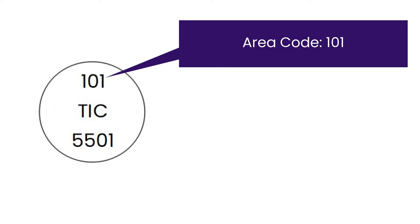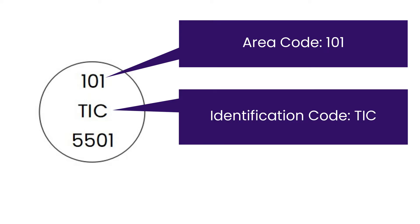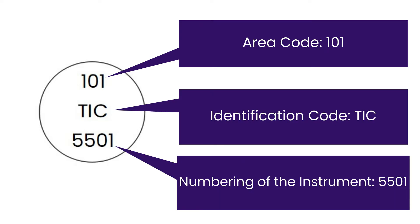We can also see some symbols like this. These symbols are made with three different parts. First is area code, that is 101. Second is parameter identification code, that is TIC, temperature indicator controller. And third is loop number in control system, in this case, numbering is 5501.